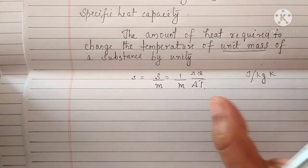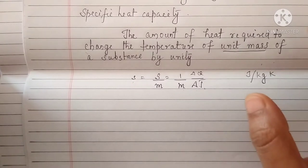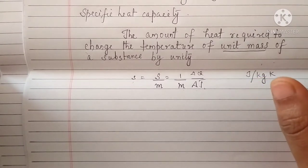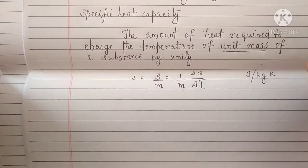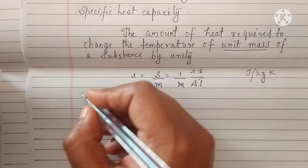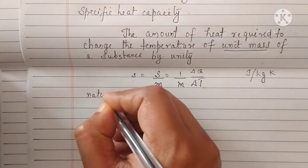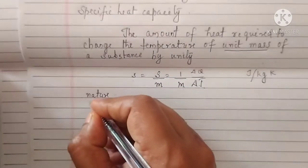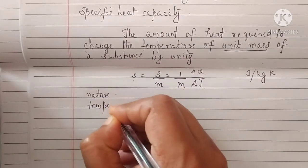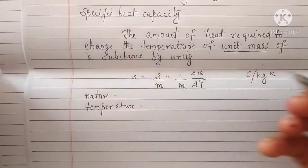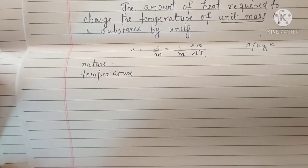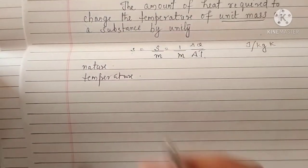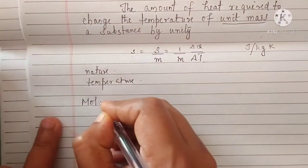Specific heat capacity is heat capacity per unit mass. This specific heat capacity depends upon the nature of the substance and also the temperature.